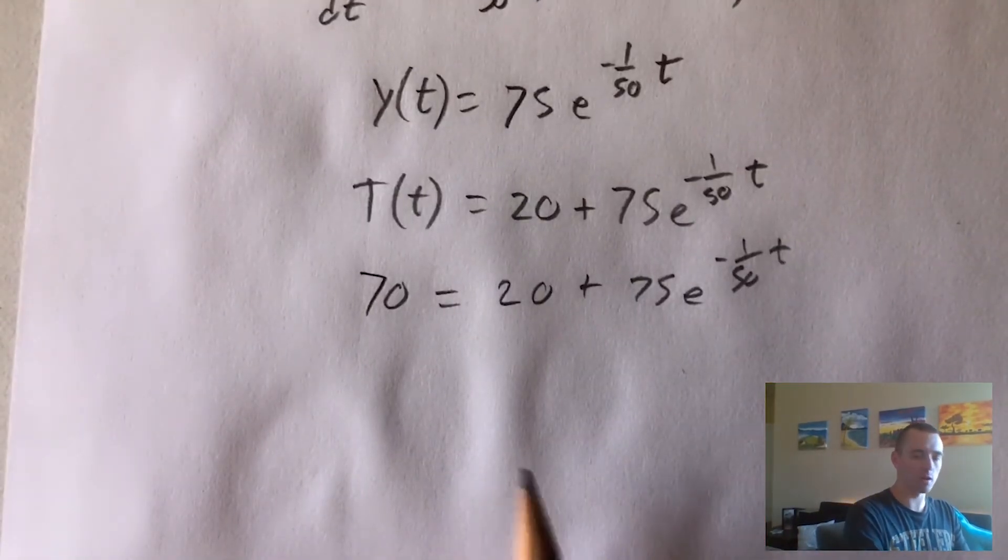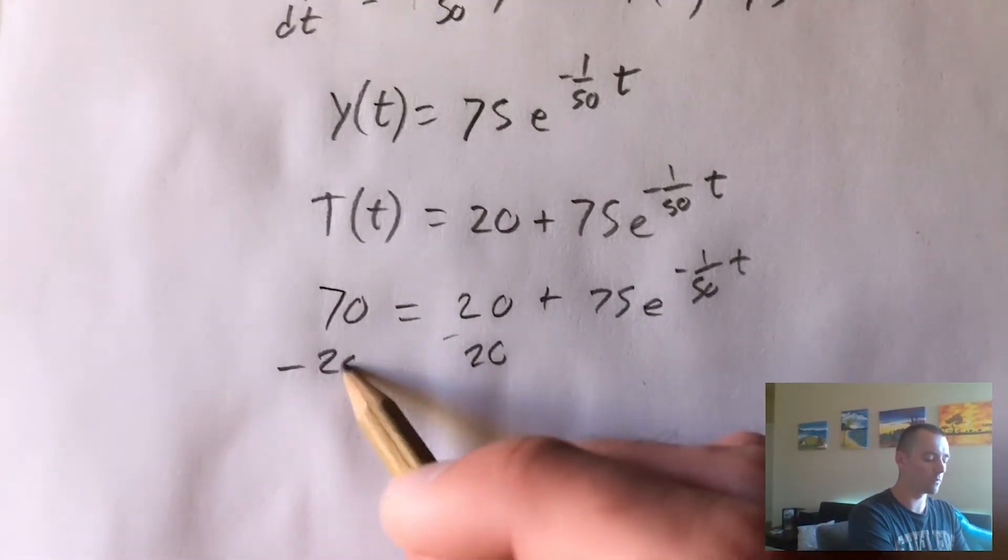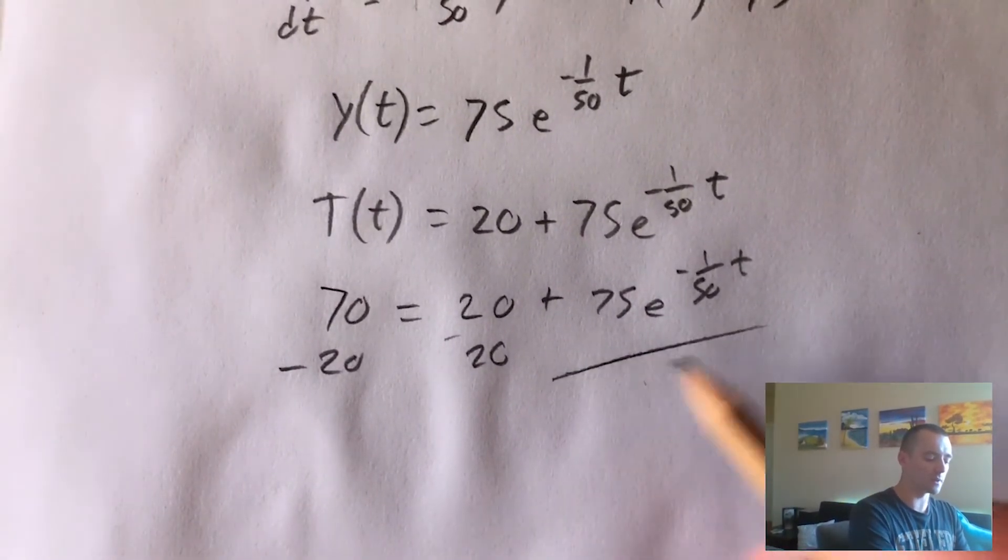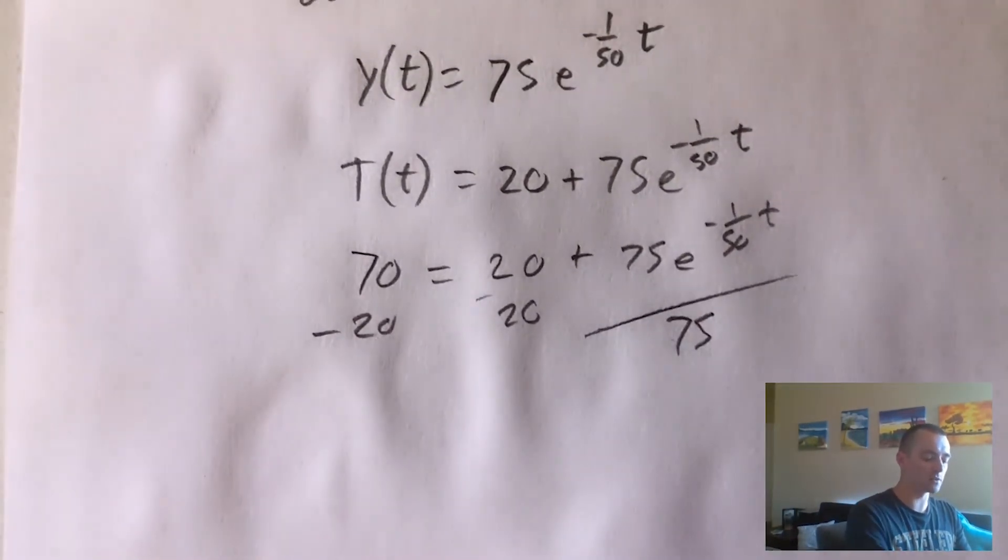So to do that, we just want to get our little t all by itself. We would subtract 20 from both sides, and then divide both sides by 75. So doing that is going to give us 70 minus 20 is 50, 50 divided by 75 is two thirds.